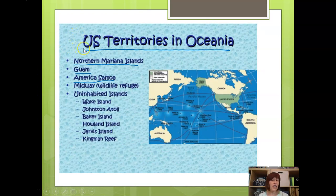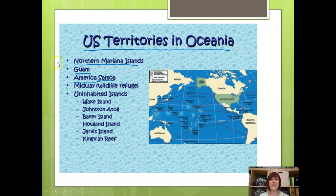In addition to the countries of Oceania, other nations of the world have territories in this region, including the United States. There are a variety of US territories in Oceania. In addition to Hawaii, there are the Northern Mariana Islands, Guam, and American Samoa.